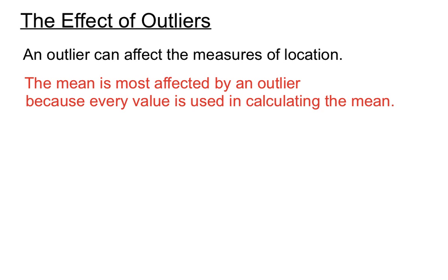The mean of a set of scores is most affected by an outlier because every value is used when we calculate the mean. A really big score will increase the mean quite a bit, or a really small score will reduce the mean by quite a bit. So an outlier does affect the mean quite a lot.